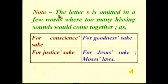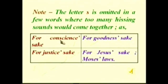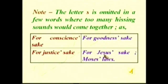Note: the letter S is omitted in a few words where too many hissing sounds would come together — there is a single apostrophe with no S after it. Examples: 'for conscience sake,' 'for goodness sake,' 'for justice sake,' 'for Jesus sake,' 'Moses laws.'